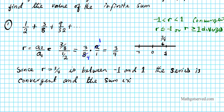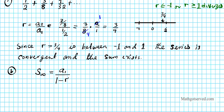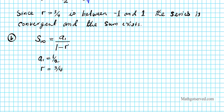Now we have to find what the sum is. To find the sum we use the formula: S-infinity, which indicates the infinite sum, equals the first term divided by 1 minus the common ratio. The first term of this series is 1/2, so A1 equals 1/2, and we already established the common ratio is 3/4. These are the only two values we need to compute the infinite sum. So S-infinity is simply going to be 1/2 divided by 1 minus 3/4.